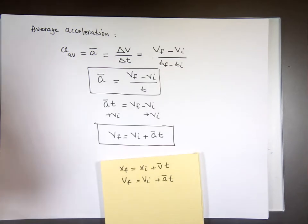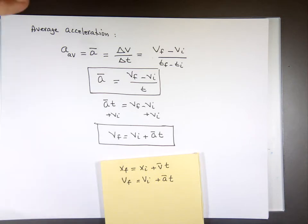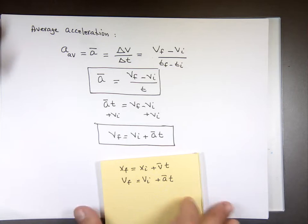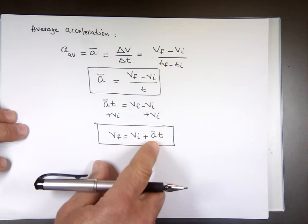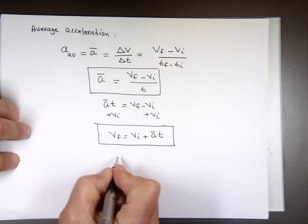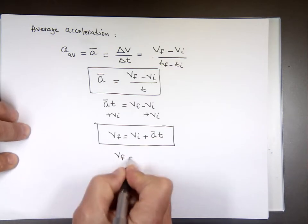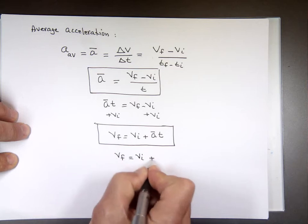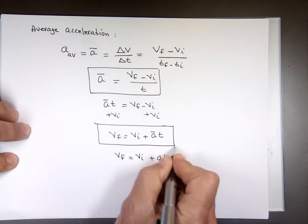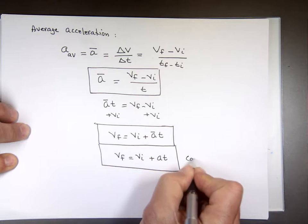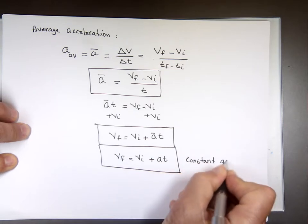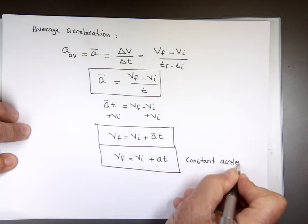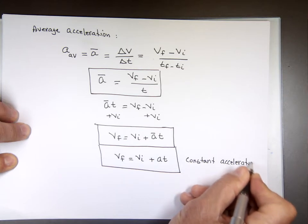Since we're dealing with only constant acceleration — all of Physics 1 we're going to deal with constant acceleration — if the acceleration is constant, then the average and the instantaneous acceleration will be the same. So that equation really becomes V-final equals V-initial plus A times T. That's why we don't have to write average acceleration.